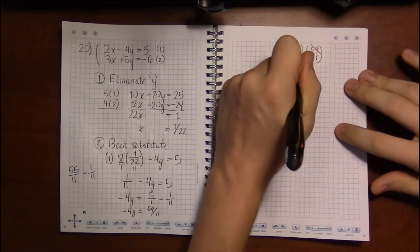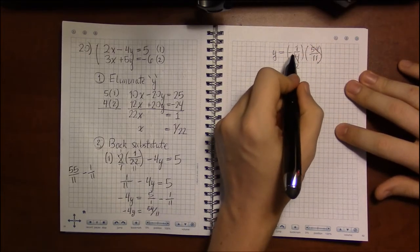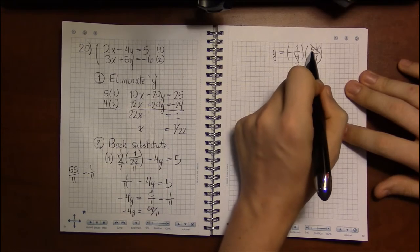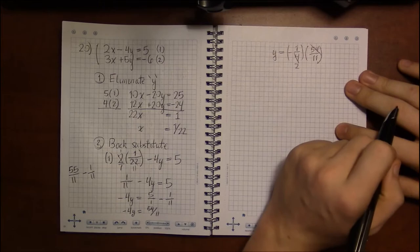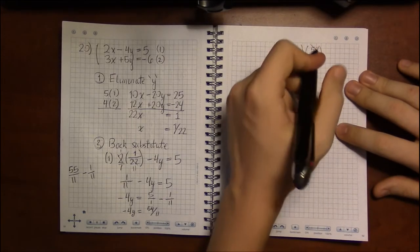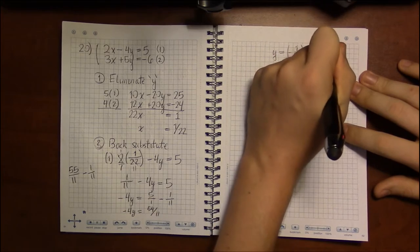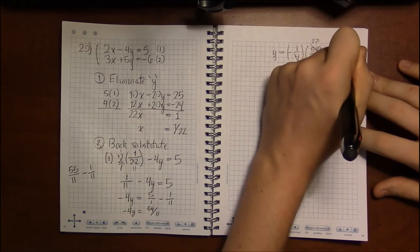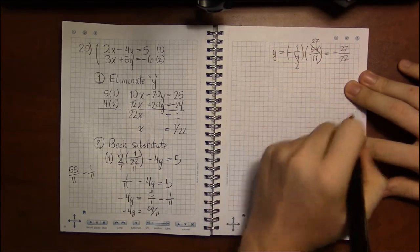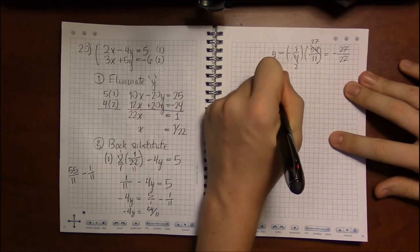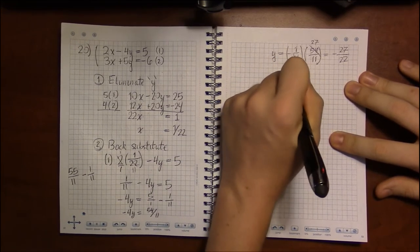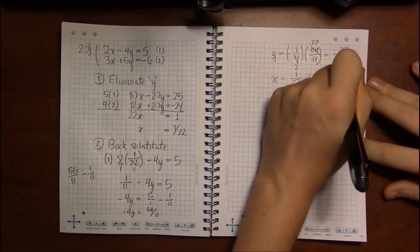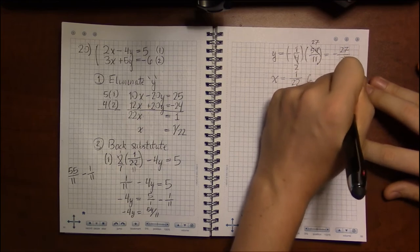And this will be nice because it turns out 4 goes into 54 rather nicely. Not entirely, but there is a bit of cancellation that can be done here. Let's see, 2 goes into 4 twice and into 54 twenty-seven times. So we get minus 27 divided by 22. So we have x being 1 over 22 and y being minus 27 over 22.